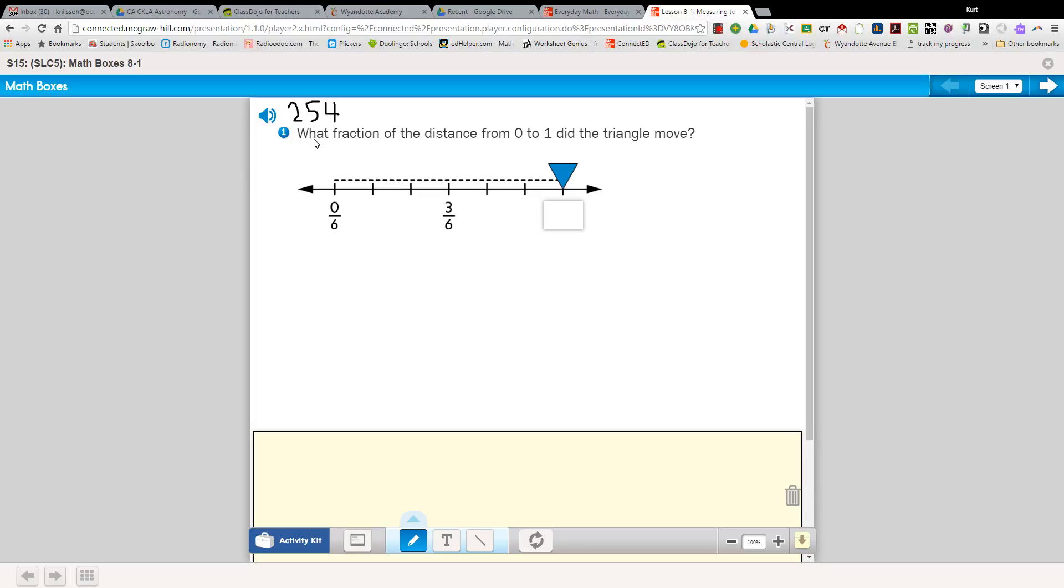Problem number one says, what fraction of the distance from zero to one did the triangle move? Well the triangle started at 0 sixths and then it moved this direction. We know it's broken into sixths. So if this is 0 sixths this must be 1, 2, 3. Go ahead and write that fraction here. Remember the fraction will have a number on top, and then the line, and then a 6 on the bottom.